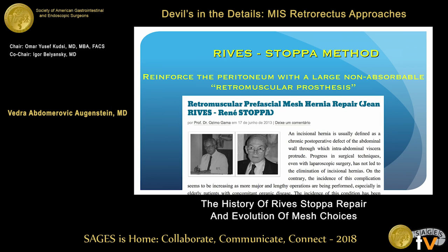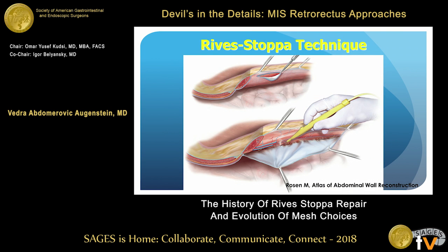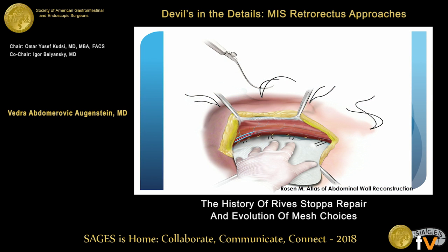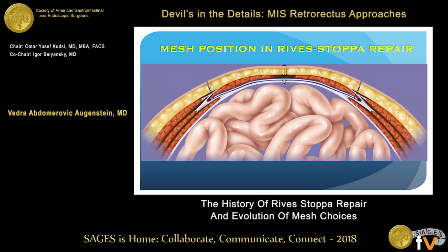Regarding Reeves-Stopa — my understanding is that Dr. Stopa was a student of Dr. Reeves, so a lot of contributions were made together. Igor gave an excellent history talk yesterday. It's a very interesting concept of actually placing a mesh in a retromuscular or preperitoneal space, and that's really what started it all. When I talk to my residents about the Reeves-Stopa repair, I'm referring to taking this posterior rectus sheath down, closing that, and then placing the mesh in the posterior retro-rectus space. Your mesh lays just opposed to the rectus muscle, but you don't dissect beyond the semilunar line.